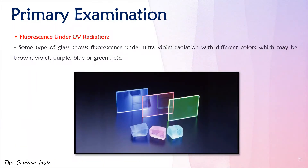We also check for fluorescence under UV radiation. Some types of glass show fluorescence under ultraviolet radiation with different colors, which may be brown, violet, purple, blue, or green.